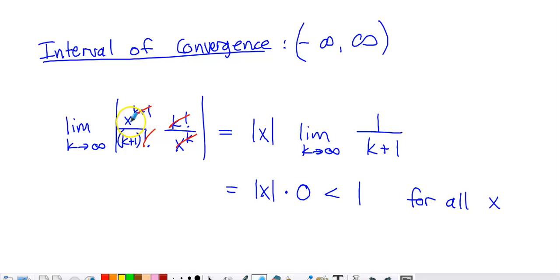Within this limit, x is unaffected as k approaches infinity. So I factored x out. I did have to keep it within the absolute values that the ratio test requires. Inside the limit, I'm just left with k plus one in the denominator. If I put infinity in place of that k, I get one divided by infinity. That's zero. The absolute value of x times zero is less than one for every single value of x. So what we've just determined about the series representation for e to the x is that the interval of convergence is negative infinity to infinity.